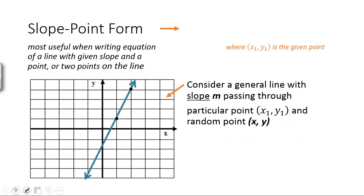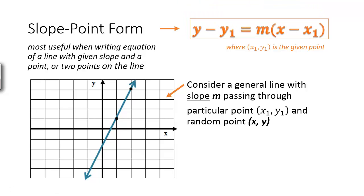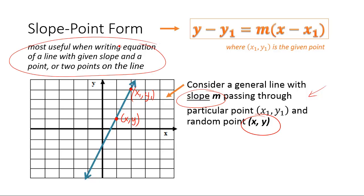Next up, we've got slope-point form. Why does it look the way it does? Let's first consider how it's built. We consider a random line with a random point (x, y), but then a particular point (x₁, y₁) that is specific, and slope m. We're doing the same thing as before, but instead of defining it by the y-intercept, we're defining it by a particular point. This is very useful when given a slope and a point, or two points — if you don't have the y-intercept, this is the form you'll need.